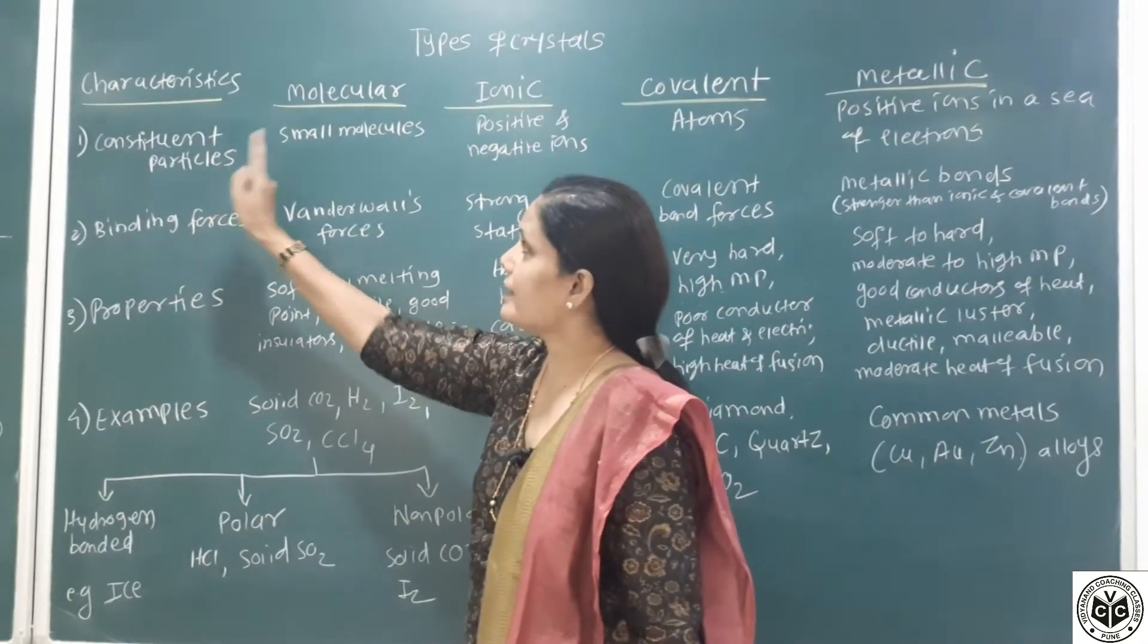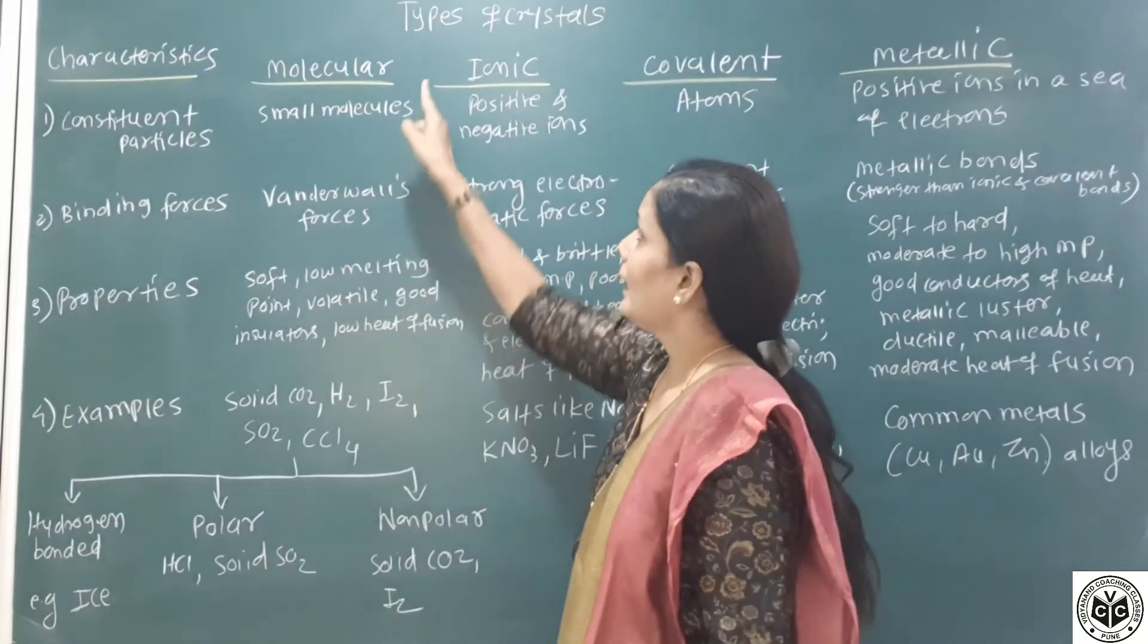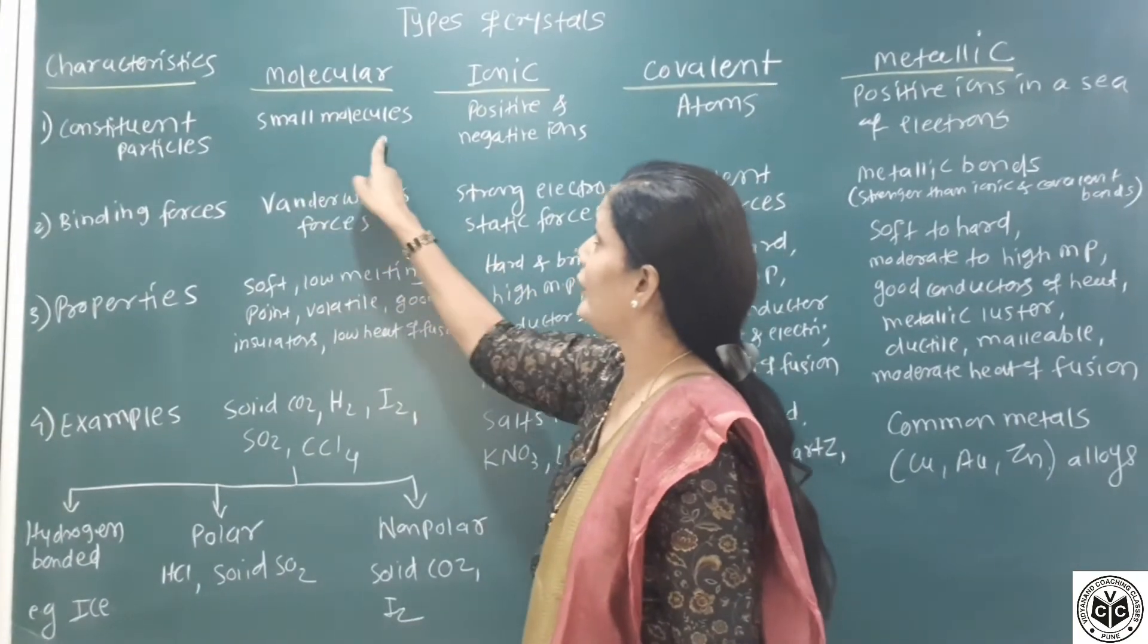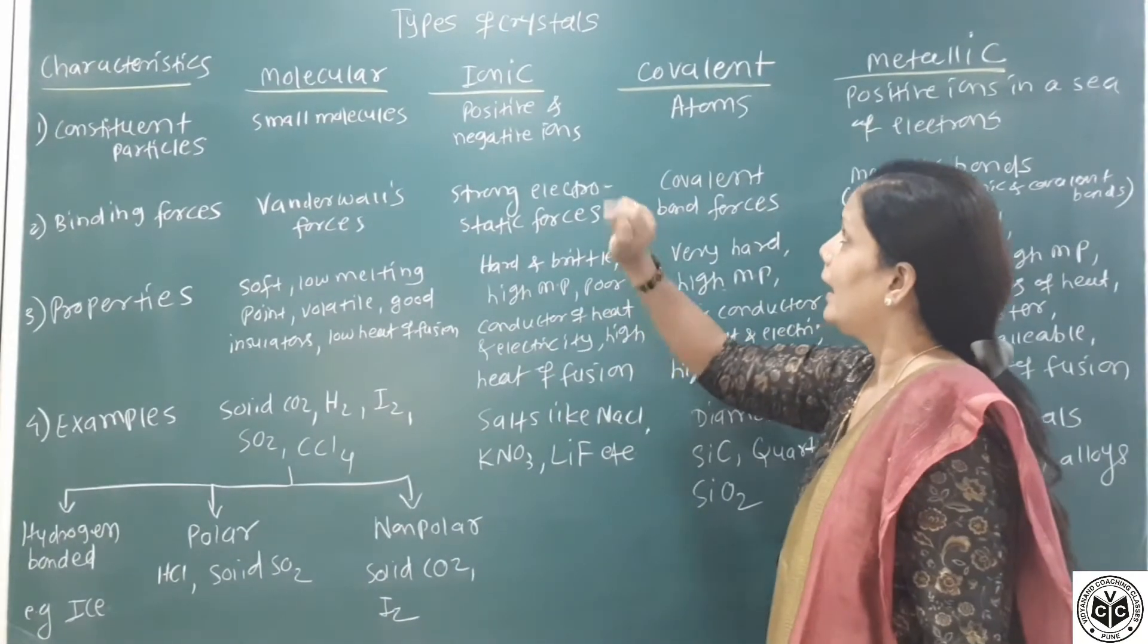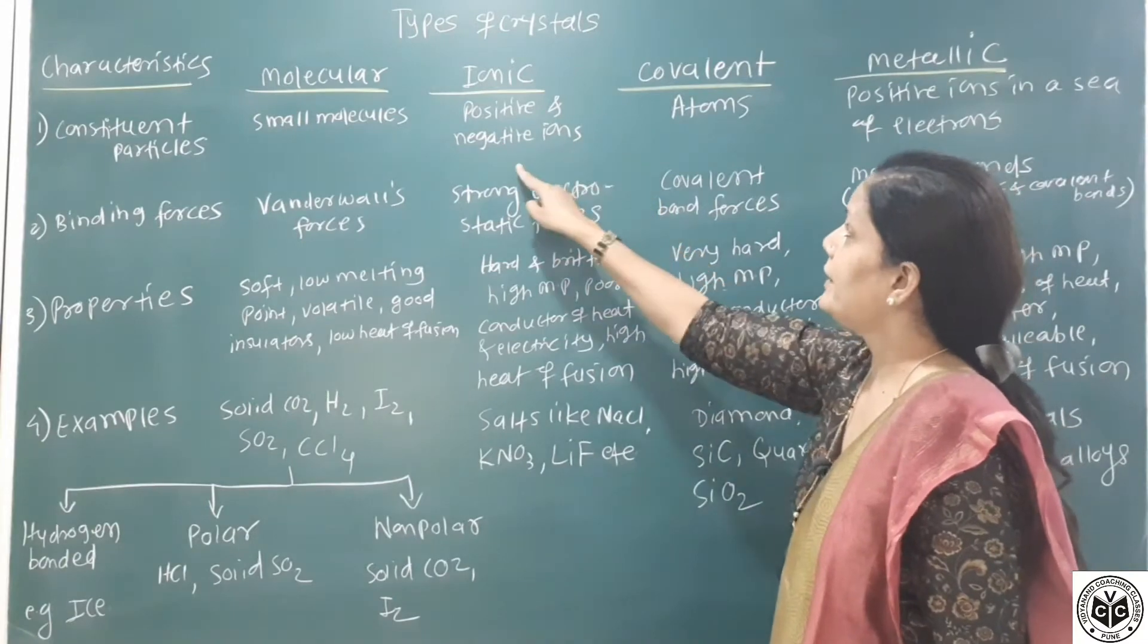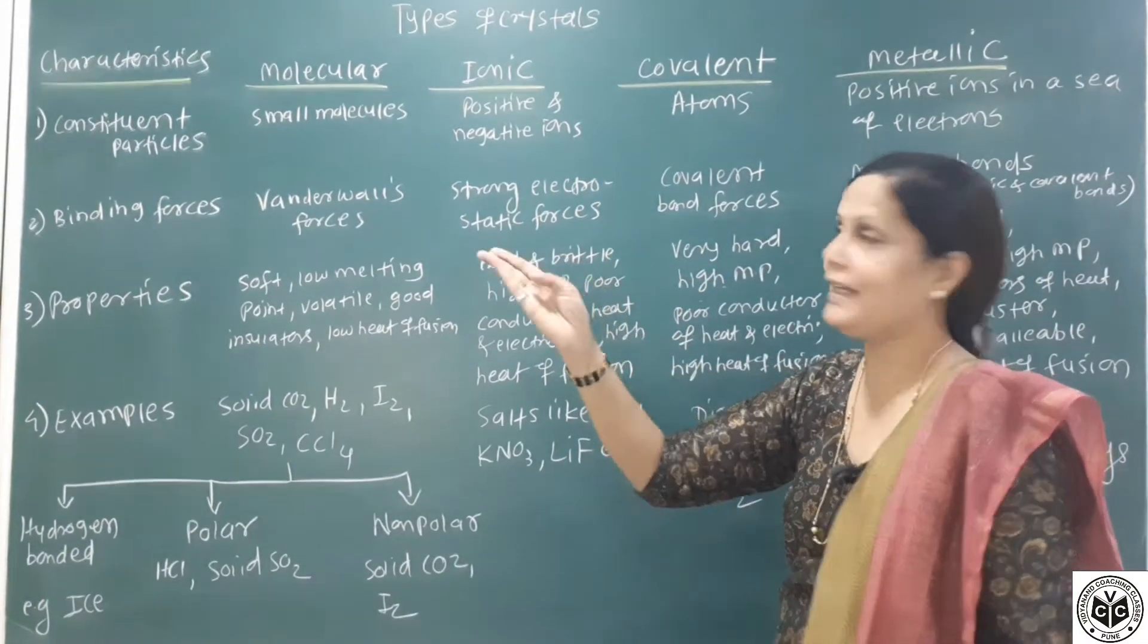First characteristic is constituent particles. In molecular solids, small molecules are present as a constituent particle. In ionic solids, positive and negative ions are there, means cation and anion.